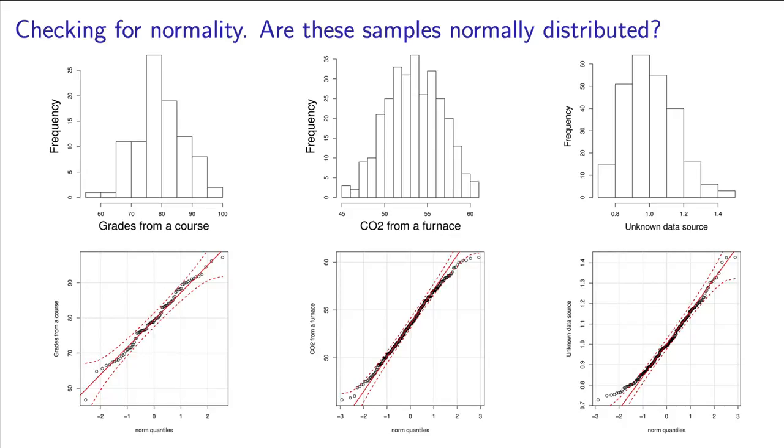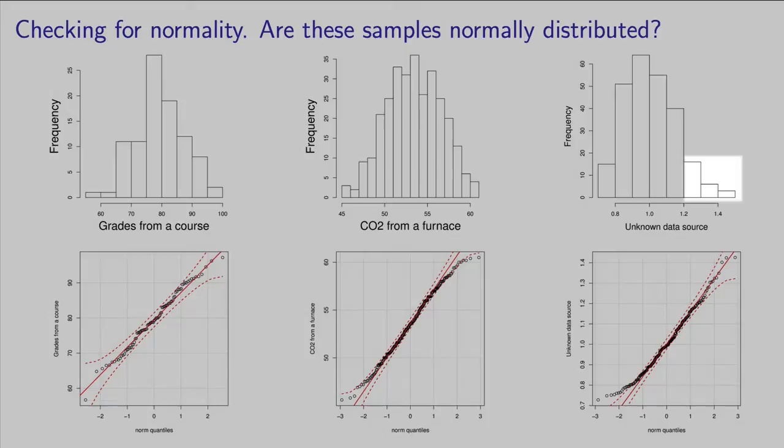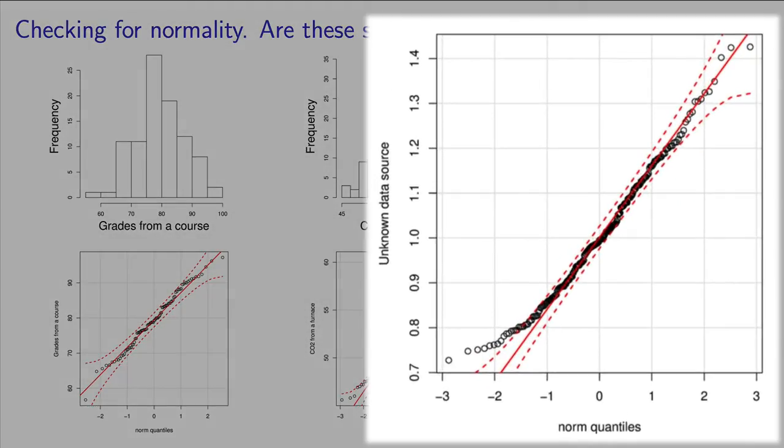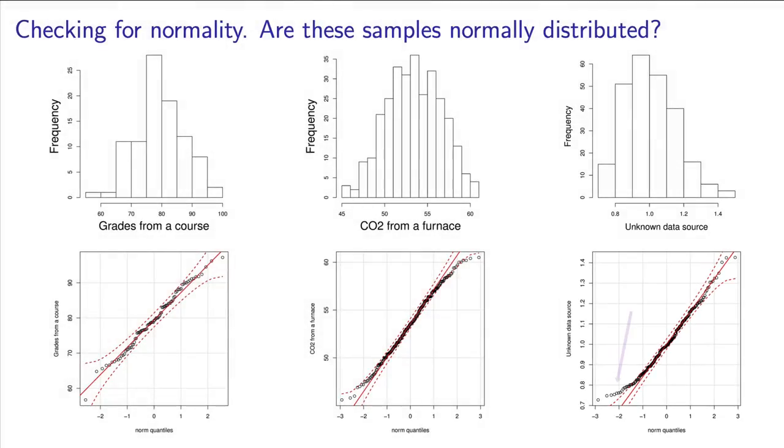This final histogram might make you think that the data are non-normal, based on the longer tail at the right. However, the qqplot shows that that part of the distribution is actually normal. It is the heavier left side that deviates from normality. That is a heavier end of the distribution, and we can start to see that in the histogram, once we've observed it in the qqplot.